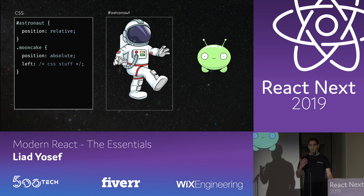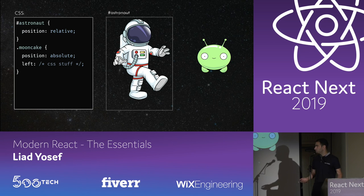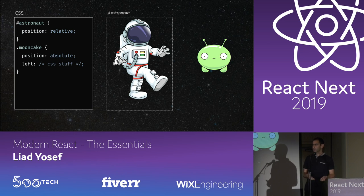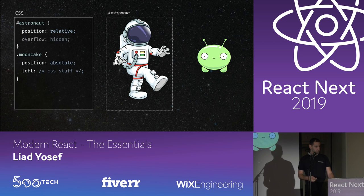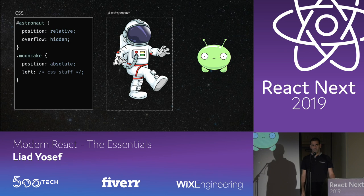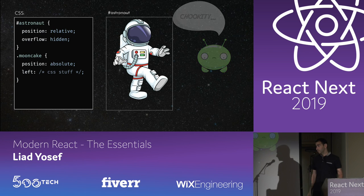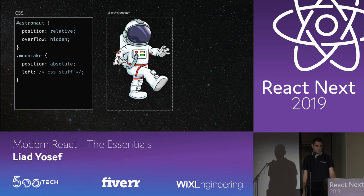How do we see Mooncake outside of the container? The answer is CSS — position absolute. That's not an uncommon use case: modals, sidebars, dropdowns — elements we want to render outside of the container but in the same component tree. But what happens if someone adds overflow hidden to the astronaut? Mooncake will disappear because it overflows from the div.